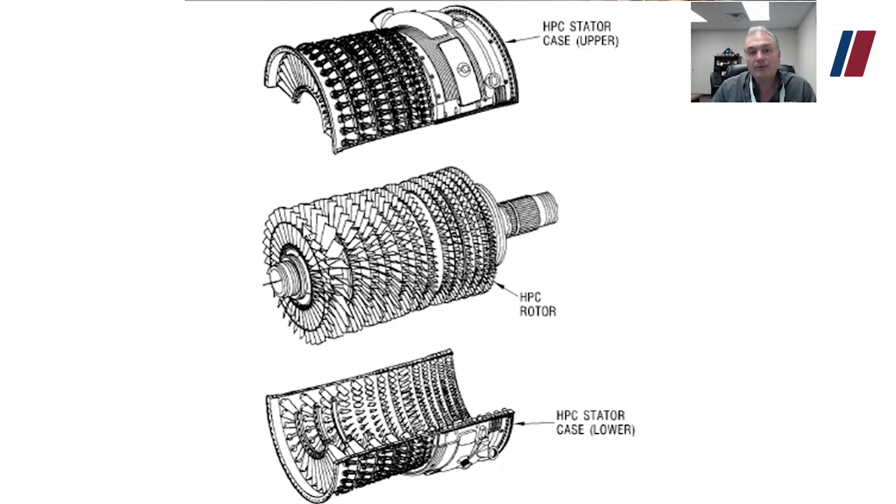The very front section of this compressor rotor here you see, the blades are really long, so they'll have mid-span platforms on them. Basically that mid-span platform is just to give us some structural strength and prevent whipping or vibration of those longer blades.